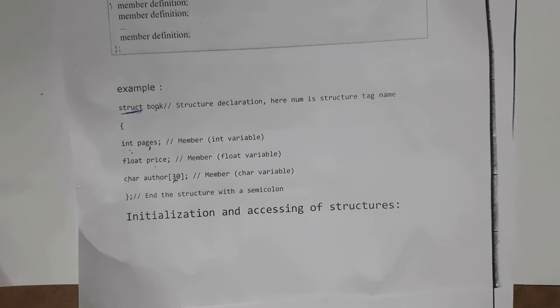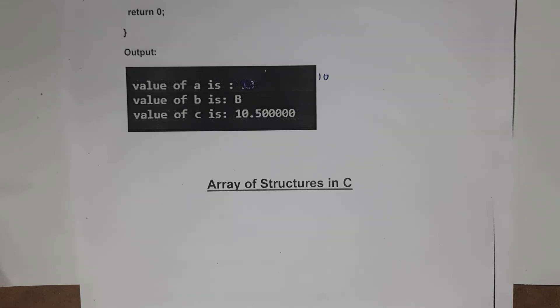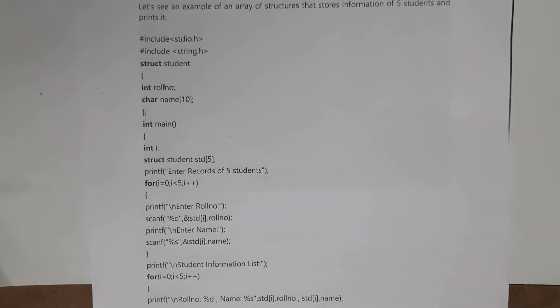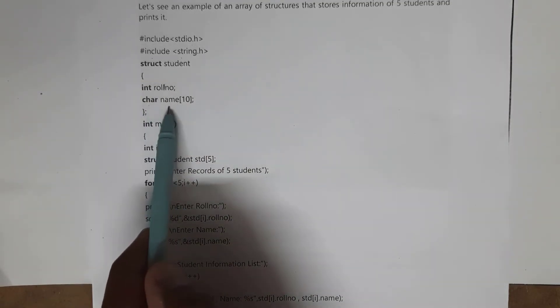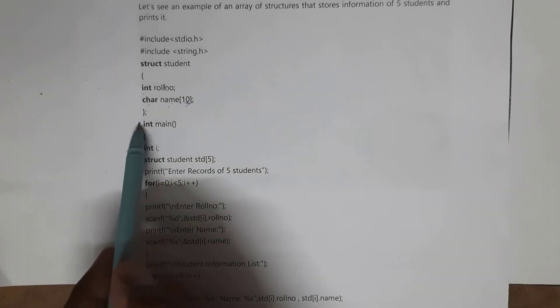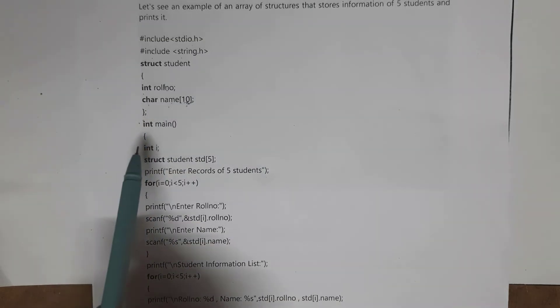Next: arrays of structures. Normally using structures we can store details of only a single book or single student. But if I want to store details of multiple books or multiple students, I need to use arrays of structures. In the example program I include stdio.h and string.h, and declare 'struct student' with members: int roll_number and char name[10].